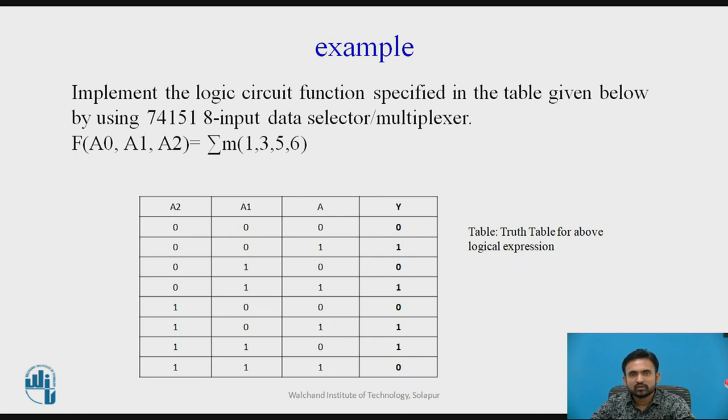I have a function A0, A1 and A2, that is I have 3 different input lines and I have some min terms in this particular function 1, 3, 5, 6. To implement this problem with the help of 8 input data selector or multiplexer, first of all I need to write the truth table. As usual the given input that is A0, A1, A2. For the A0, A1, A2 I can able to write 8 possible inputs. They are 0, 0, 0, 0, 0, 1, 0, 1, 0, 0, 1, 1, 1, 0, 0, 1, 0, 1, 1, 1, 0, 1, 1, 1. And my outputs for min term 1, 3, 5 and 6 is 1, that is min terms we used to represent with the symbol 1 and for remaining all we used to write 0, this is my truth table.